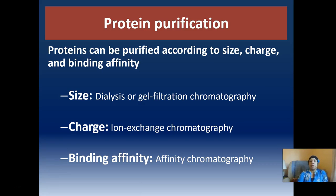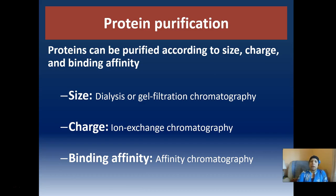In general, the three main criteria we use to purify proteins are size, charge, and binding affinity. Chromatography is a common method to separate on any one of these criteria. The type of chromatography depends on what criterion we're using: gel filtration chromatography for size, ion exchange chromatography for charge, and affinity chromatography for binding affinity.